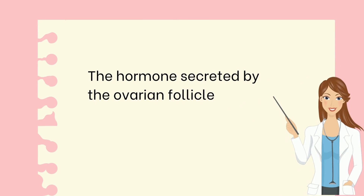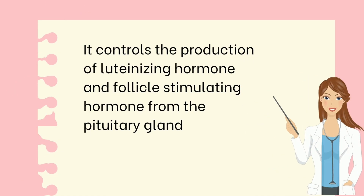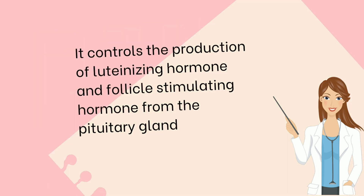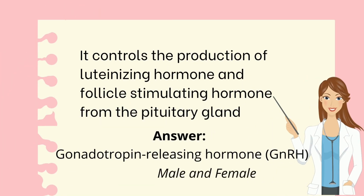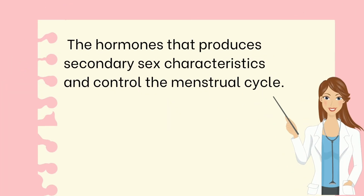The hormone secreted by the ovarian follicle — the correct answer is estrogen, which is also found in females. Next, it controls the production of luteinizing hormone and follicle-stimulating hormone from the pituitary gland — the correct answer is gonadotropin-releasing hormone, or GnRH, which is found both in males and females.